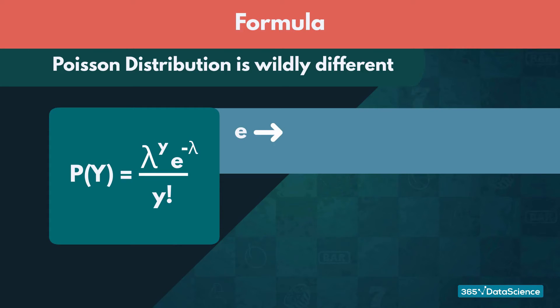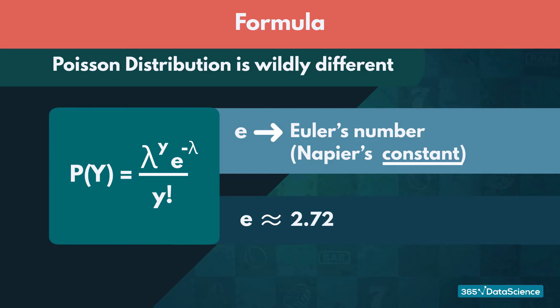First, the E you see on your screen is known as Euler's number, or Napier's constant. As the second name suggests, it's a fixed value, approximately equal to 2.72.